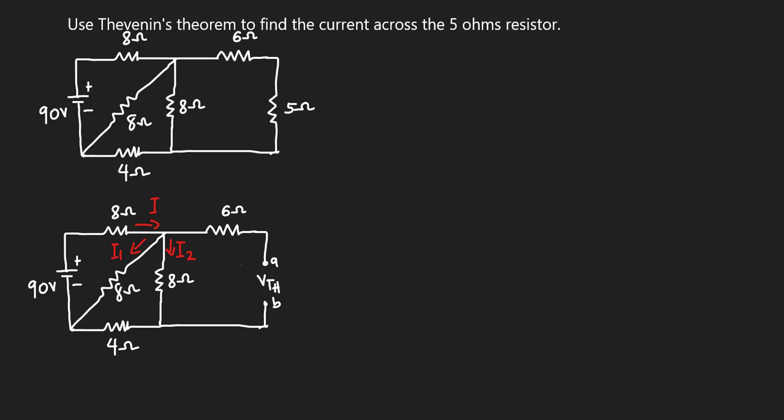To find Vth, we must find the voltage drop across the 8 ohms resistor. That voltage drop will be the same as Vth because Vth is connected to the same node that the 8 ohms is connected to. To find that voltage drop, we must find the current I2 flowing through it.